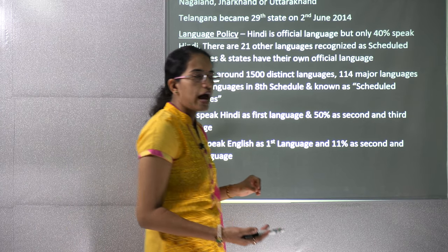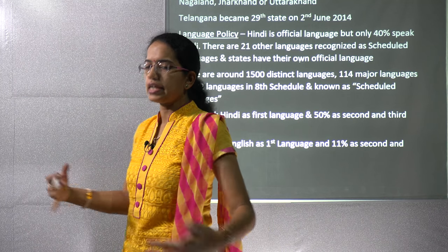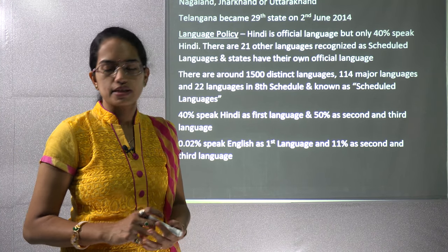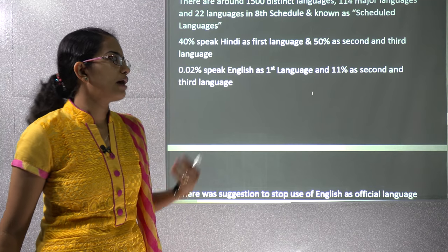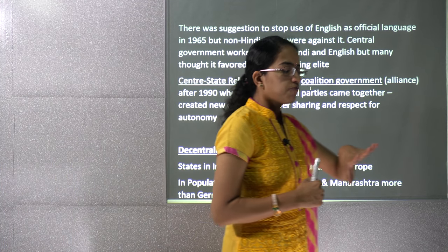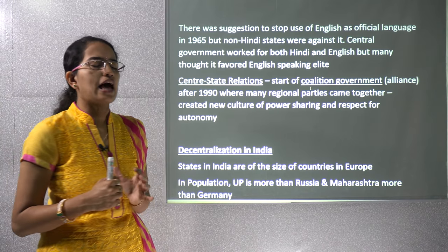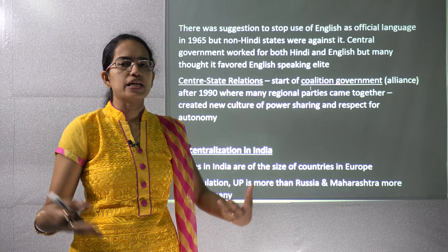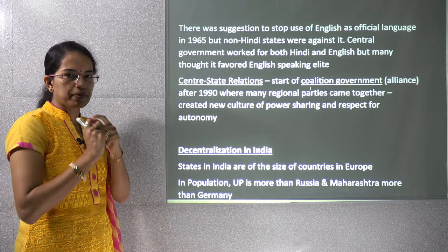Hindi is the most popular scheduled language — 40% of the population have Hindi as their first language, and including second and third language speakers it comes to nearly 50%. For English, only 0.02% have it as their first language, but including second and third language speakers, it reaches 11%. Non-Hindi states believed Hindi should not be the sole official language, so the government ruled that all official and judicial documents would remain in English.